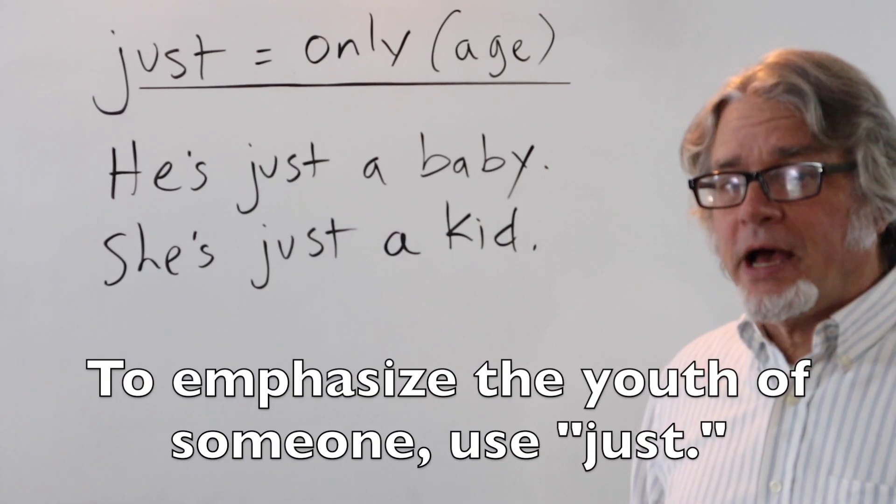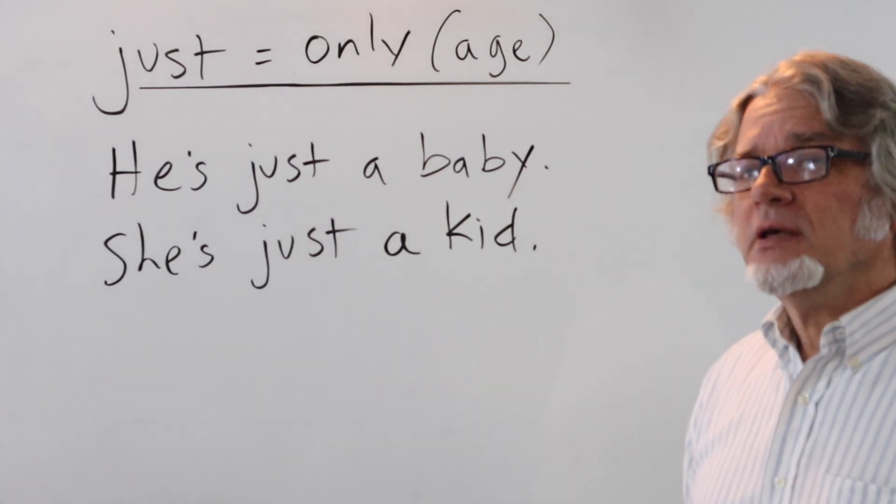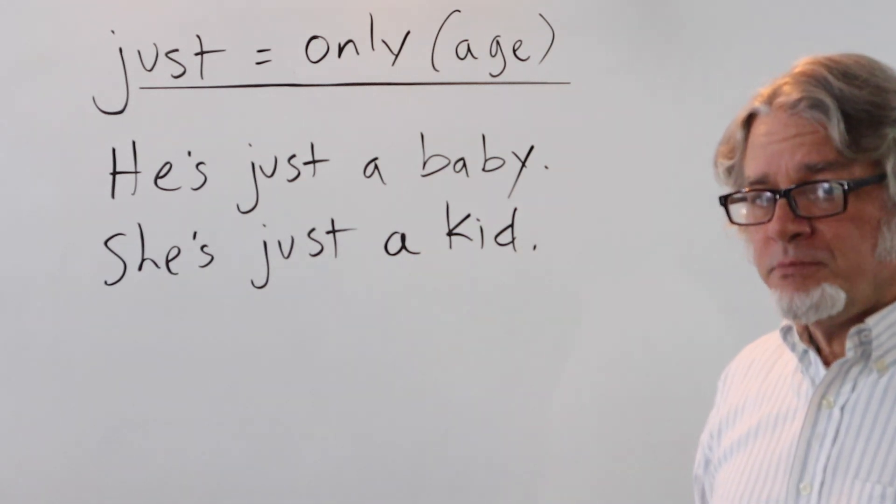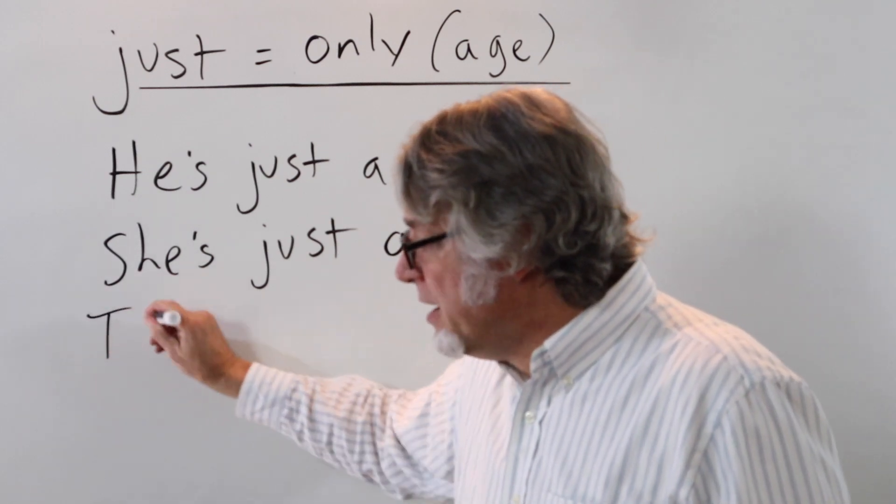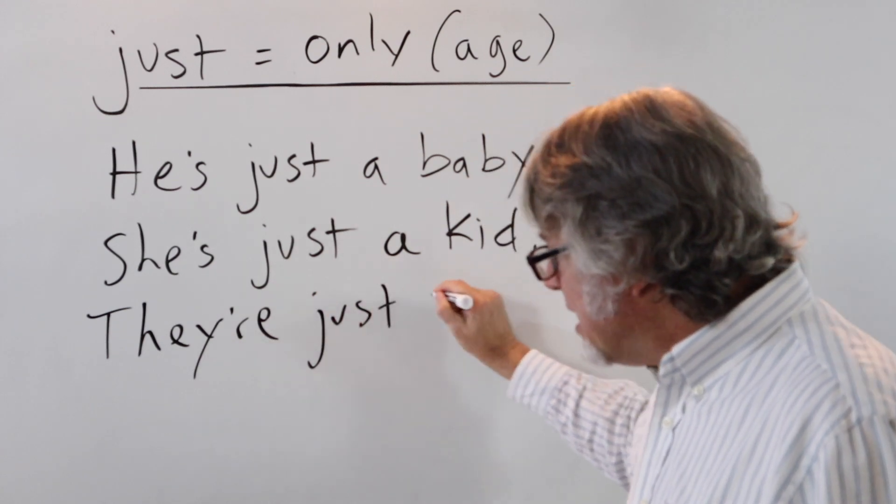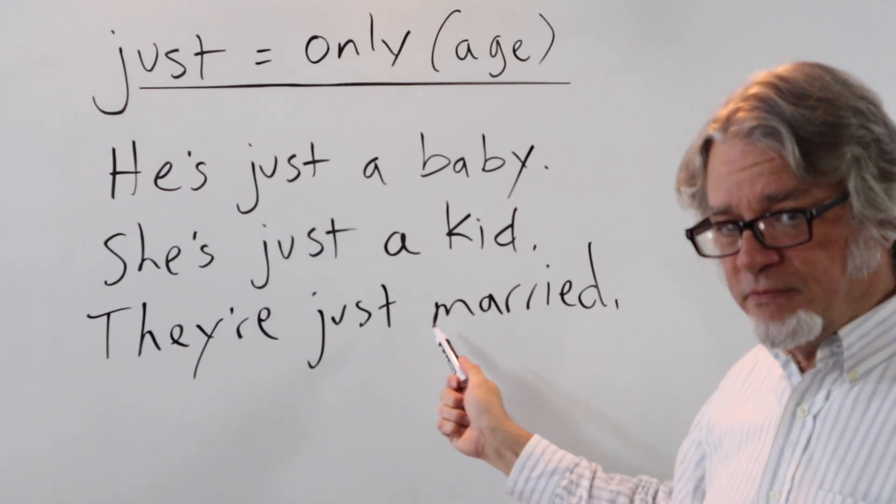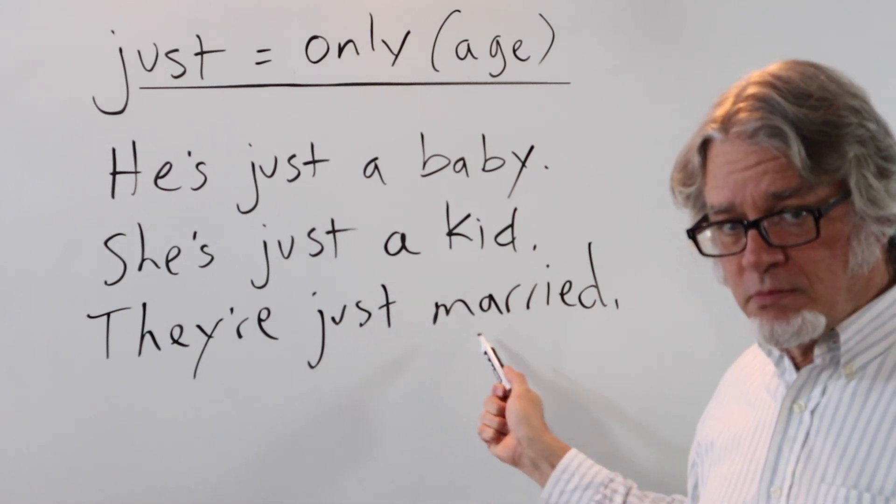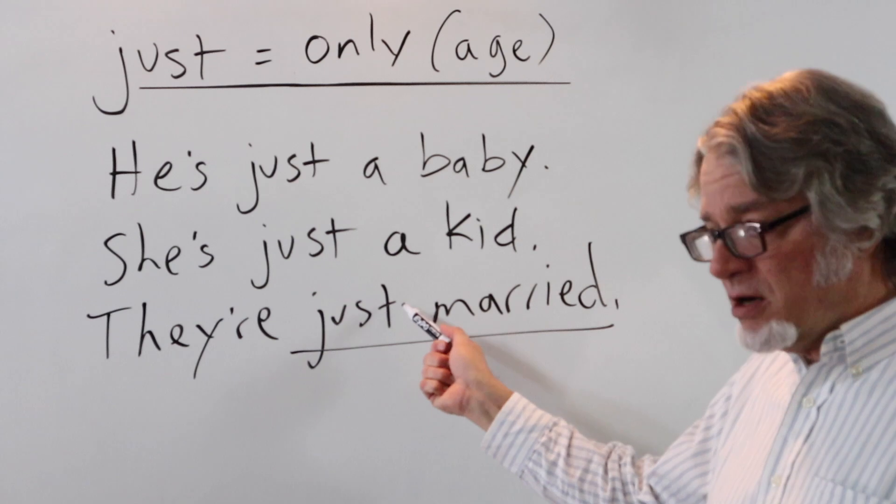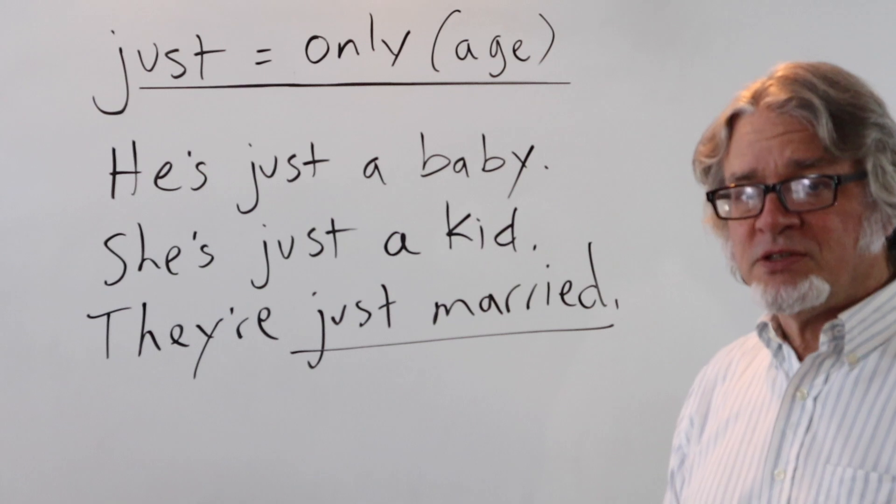To emphasize the youth of someone, use just. He's just a baby. Or she's just a kid. But you could also use it for a married couple and say they're just married. So, the relationship is still very new. Young, perhaps. They're just married. Sometimes you'll see just married on a car to celebrate a very recent marriage.